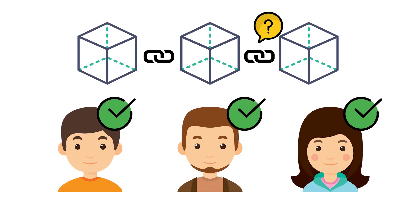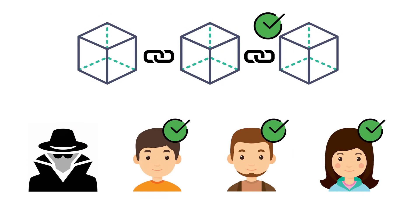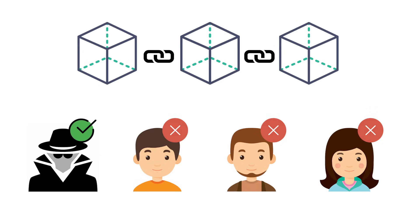If everything checks out and we have a majority of the network — over 50 percent — that agrees on verifying this new block, then we have what is called consensus and the accepted blockchain is updated to include this new block. And if someone were to change data in the chain or add a block that had tampered data that gave them a million dollars, their version of the blockchain would be different than what's accepted by the majority in the network, and this person would not be able to get this change onto the real accepted blockchain.